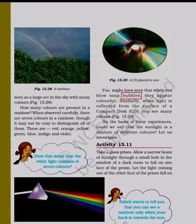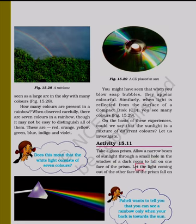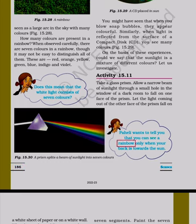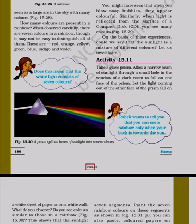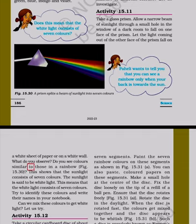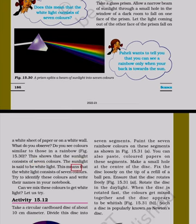You might have seen that when you blow soap bubbles, they appear colorful. Similarly, when light is reflected from the surface of a compact disc (CD), you see many colors. On the basis of these experiences, could we say that the sunlight is a mixture of different colors? Activity 15.11: Take a glass prism. Allow a narrow beam of sunlight through a small hole in the window of a dark room to fall on one face of the prism. Let the light coming out of the other face of the prism fall on a white sheet of paper or on a white wall. This shows that the sunlight consists of seven colors. The sunlight is said to be white light, meaning that the white light consists of seven colors.